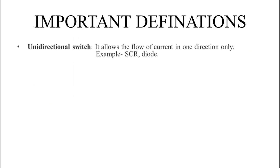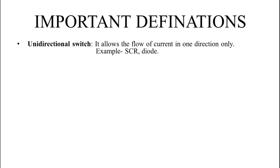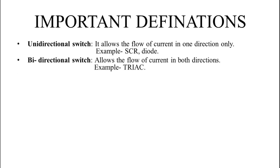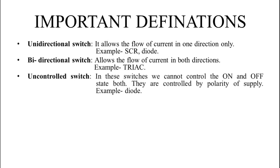First is unidirectional switch. A unidirectional switch allows the flow of current in one direction only. Thyristor and diode are unidirectional devices because they allow current to flow in one direction only, that is from anode to cathode. Second is bidirectional switches. These switches allow the flow of current in both directions. Example is triac.